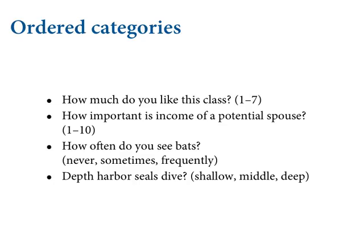If I ask you a question — how often do you see bats? Never, sometimes, and frequently have an order and they cannot be shuffled. This last example is from a published paper I collected years ago: depth harbor seals dive — shallow, middle, deep. There's information there that you might use to understand harbor seal behavior, but it's not metric. Deep is deeper than middle and middle is deeper than shallow. The world is full of this stuff because of the way we measure it. It has ordering and it has categories and then they come together.